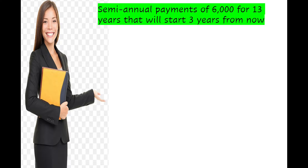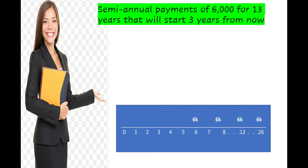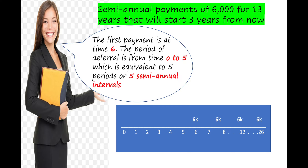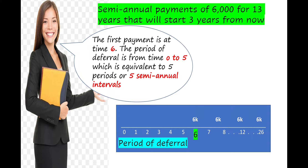Another example: semi-annual payments of ₱6,000 for 13 years that will start 3 years from now. Since that is semi-annually — twice a year for 13 years — the period of payment goes up to 26 (that is 13 times 2). The first payment is at time 6, which is ₱6,000. The period of deferral is from 0 to 5, equivalent to 5 periods or 5 semi-annual intervals — that is 6 minus 1, giving 5.